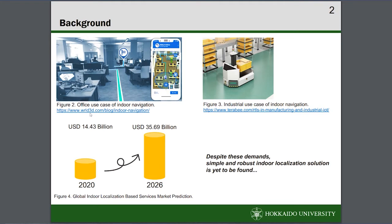I would like to start with the background of our study. Today there are various applications for indoor positioning. For example, it can be used to guide people in an office, navigate robots in a factory, or guide customers in a shopping mall.